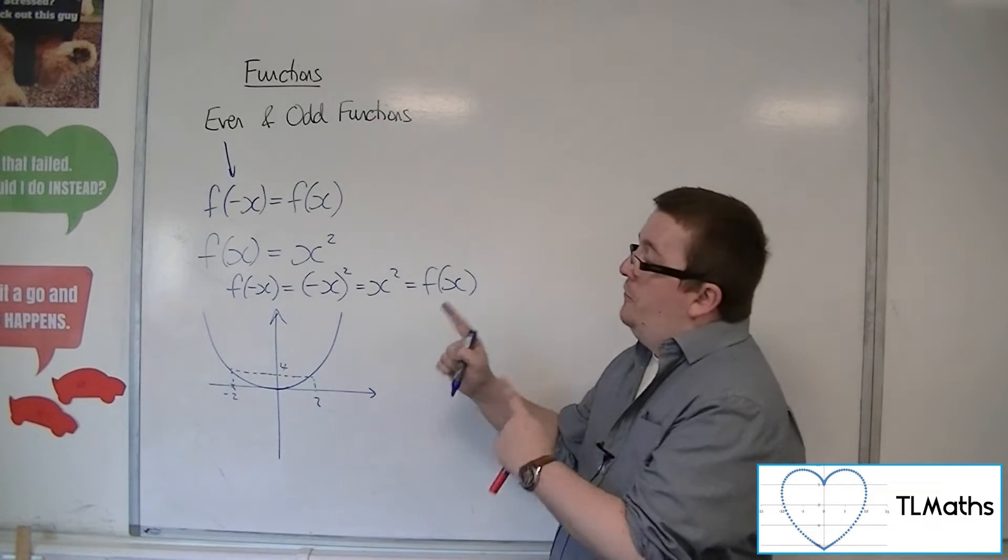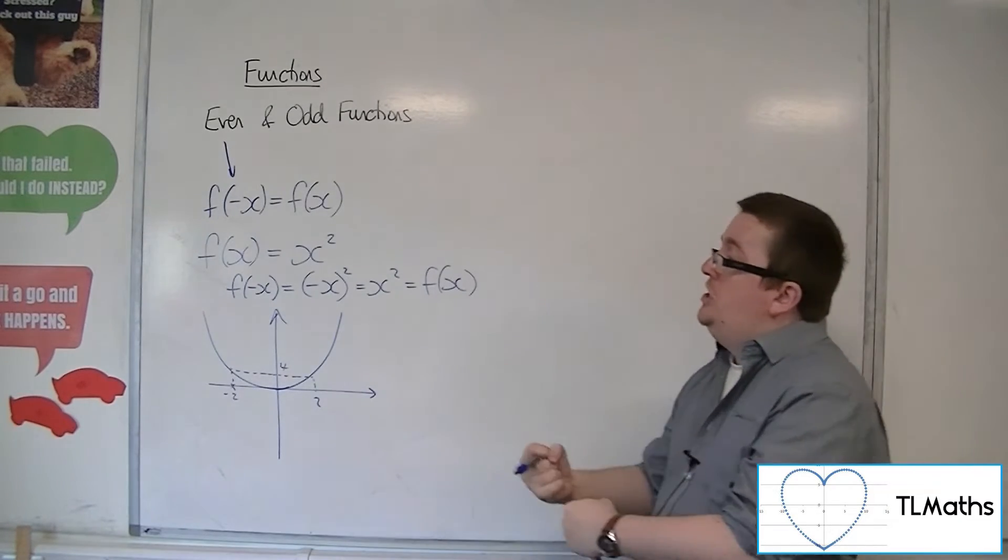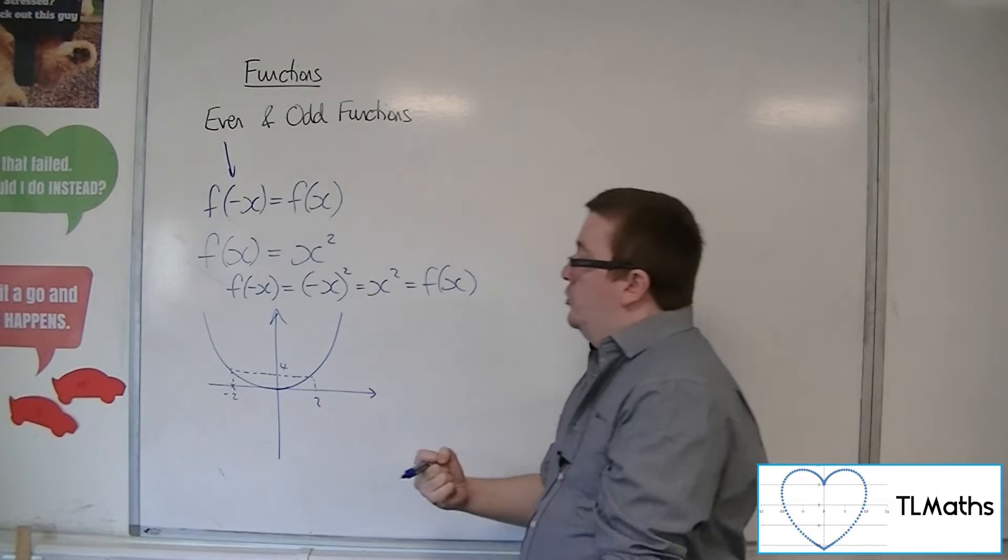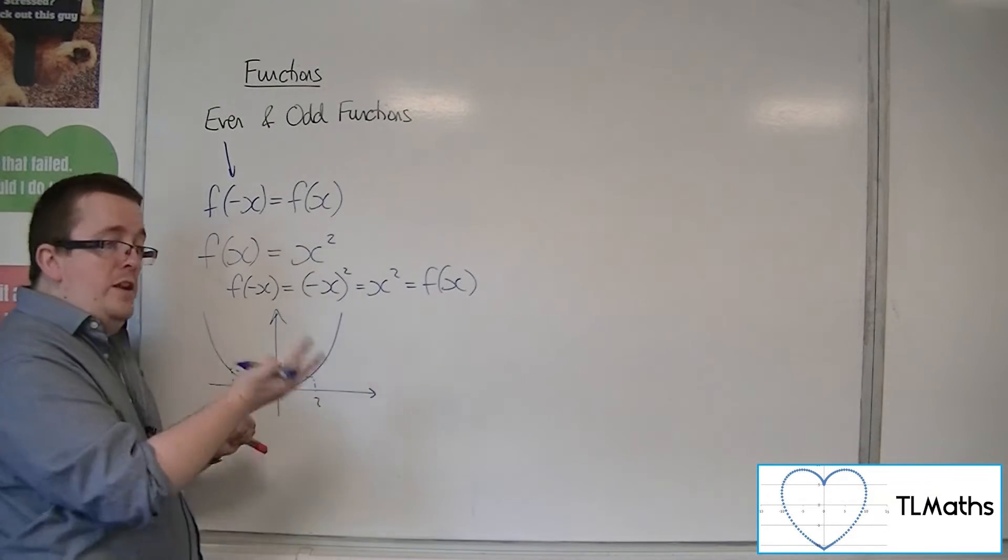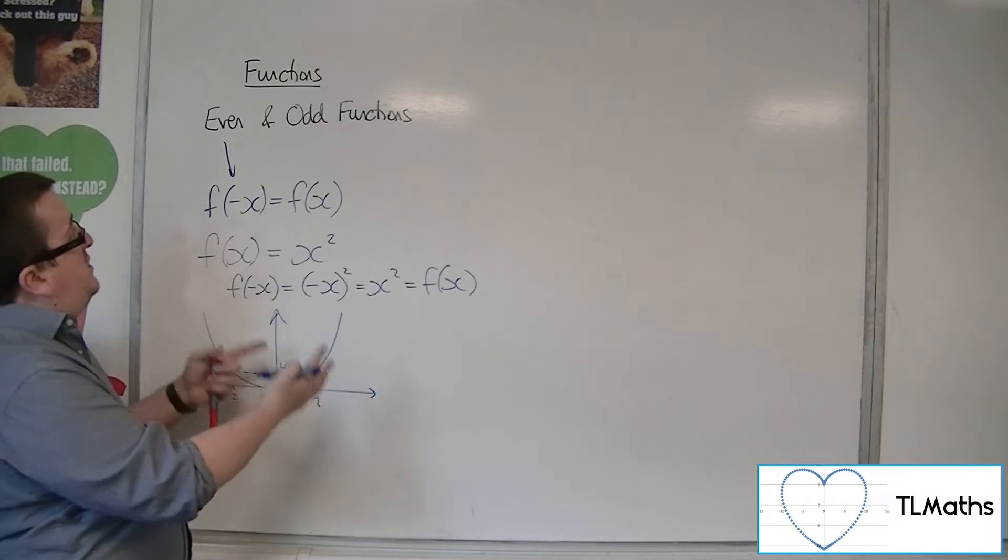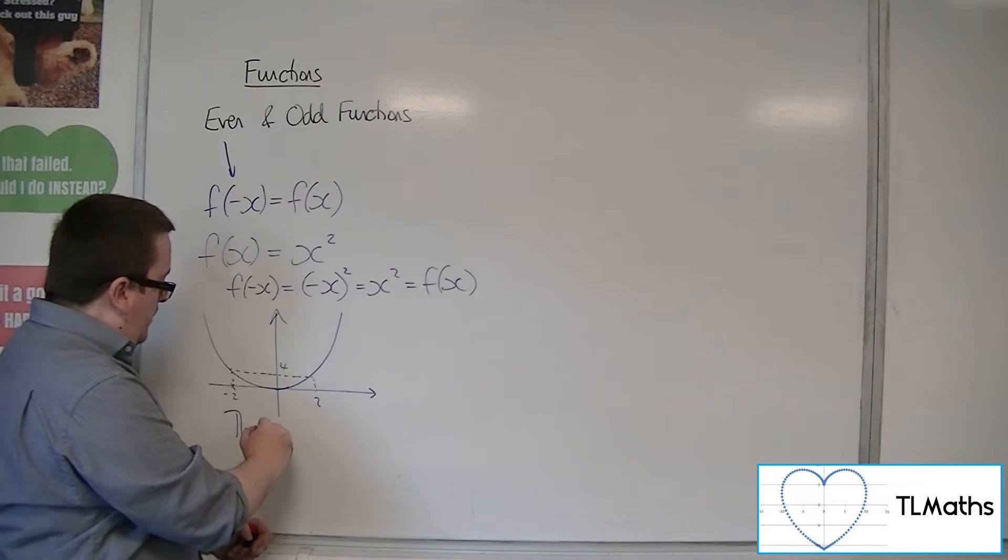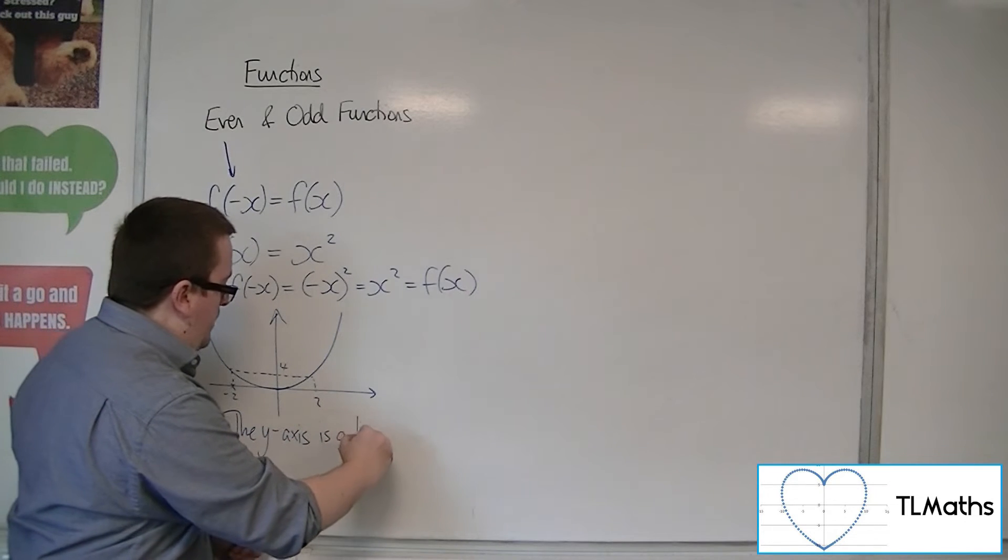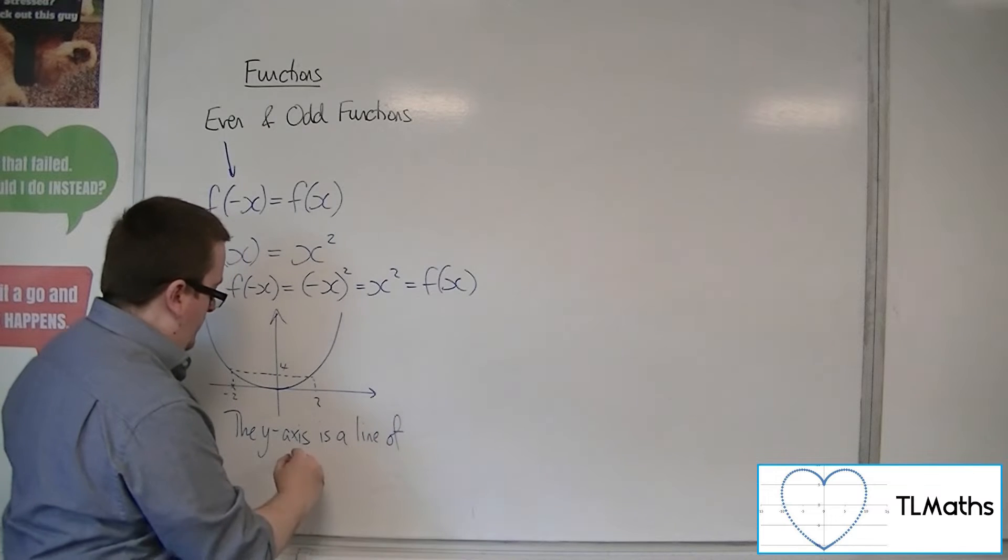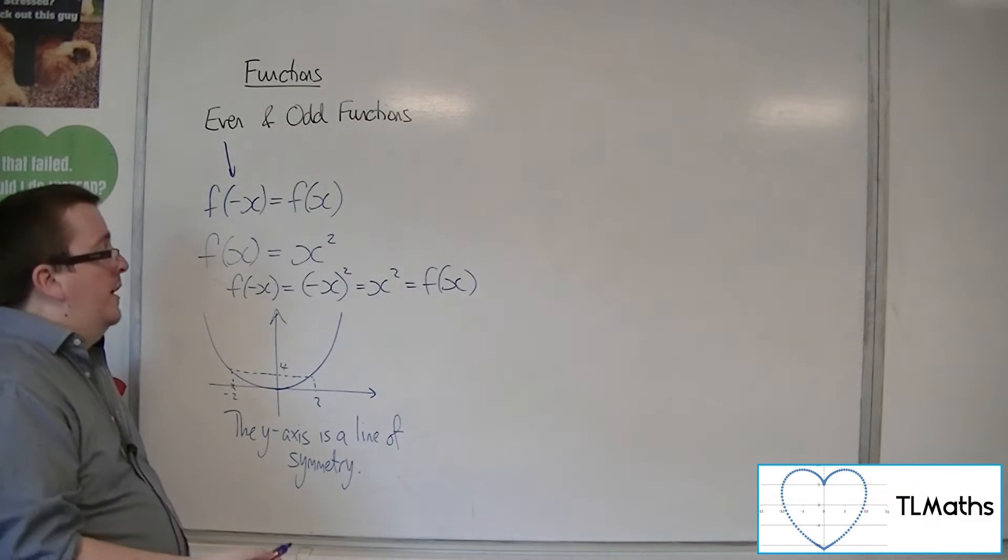So even functions in general, because the minus x makes no difference to the function whatsoever, that must mean that it must look the same at either side of the y-axis. And so even functions have the property of having the y-axis as a line of symmetry. And that is true for all even functions.